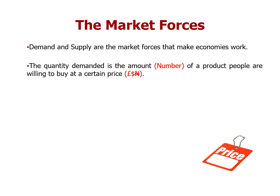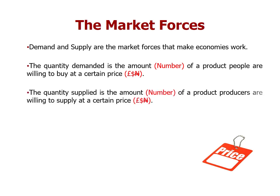The quantity supplied is the amount, also in terms of number, of a product producers are willing to supply at a certain price. So Tesco is our supplier in this case. How many pens would they be willing to supply at one pound, and how many at two pounds? You can see that price is a reflection of supply and demand — both suppliers and customers are looking at price, so price brings it all together.